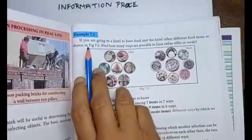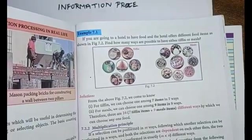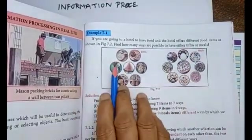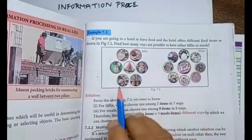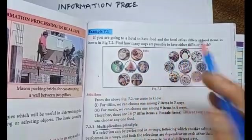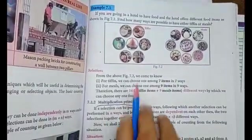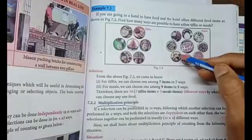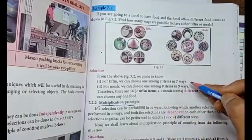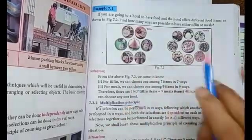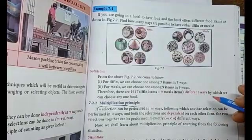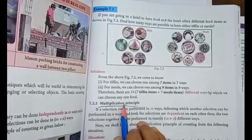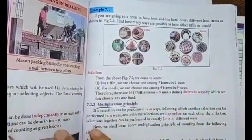Next example. If you are going to a hotel to have food and the hotel offers different food items as shown, that is here. Different meals. Find how many ways are possible to have either tiffin or meals. Here what? 1, 2, 3, 4, 5, 6, 7 tiffin item. Here 2, 4, 6, 8, 9 meals item. So, 16, that is 7 tiffin item plus 9 meals item. So, there are 16 different ways by which we can choose any one food. That is plus addition principle.